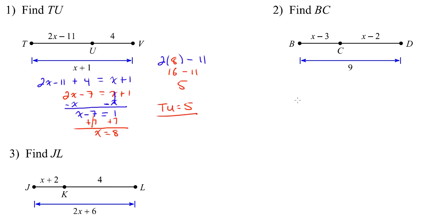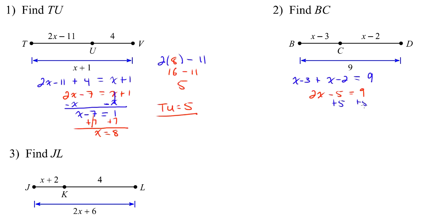Now let's look at example number 2. They want us to find BC. We write our equation: BC is x minus 3, plus CD which is x minus 2, equals BD which is 9. Combining like terms: x and x gives 2x, negative 3 and negative 2 gives negative 5. Adding 5 to both sides gives 2x equals 14. Dividing by 2 gives x equals 7.